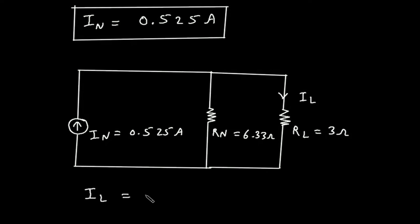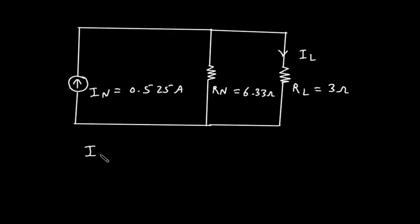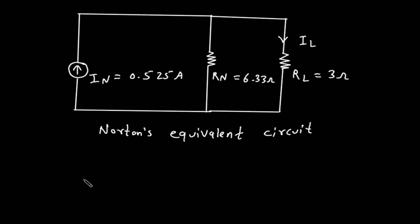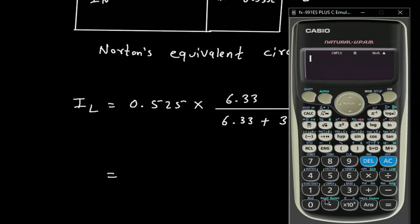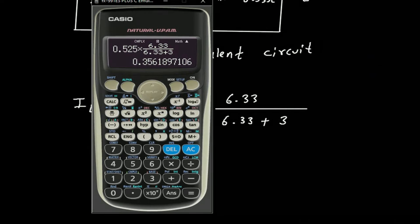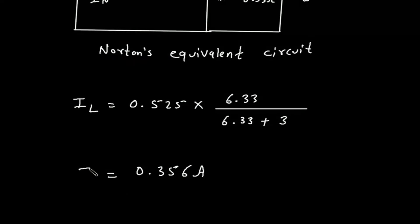So we can find IL by using again the current division formula. This is Norton's equivalent circuit. By using the current division rule formula, IL is equal to this current, that is 0.525, multiplied by the opposite branch resistance, that is 6.33, divided by 6.33 plus 3. So it is 0.356 ampere. This is the value for IL.